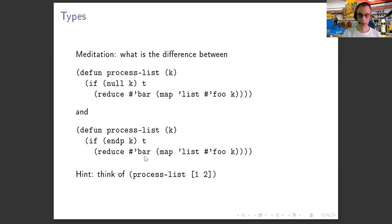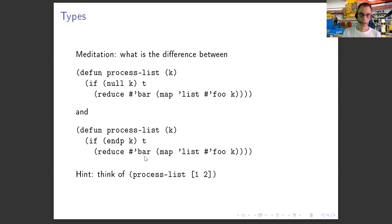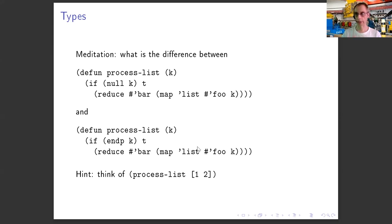So that was tail recursion optimization. Now we'll look a little bit closer at types. Here's a slightly contrived example: the first bit says `if (null K)` then return something, and the second says `if (endp K)` then return something. If K is an empty list, both `null` and `endp` are true — so they do the same thing for the function `process-list`. But if you remember the inner function that can optimize things when it knows K is a positive integer, it doesn't need to do other checks.